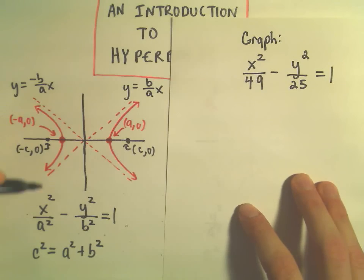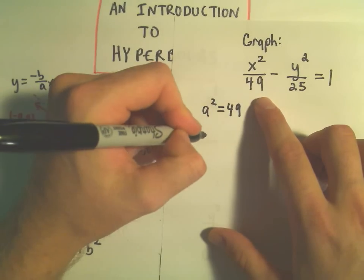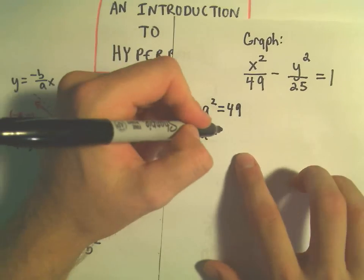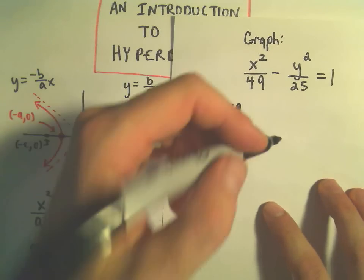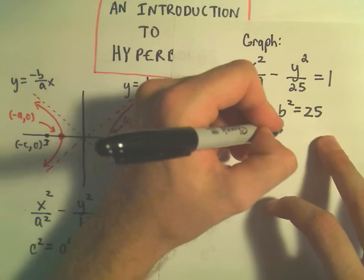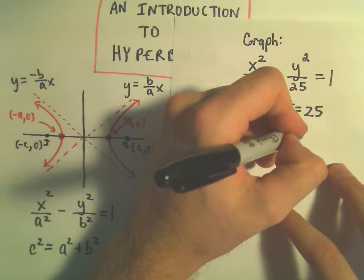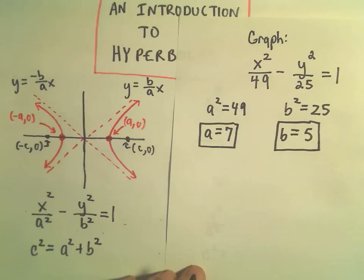So a squared is going to equal 49. So if we take the square root we would get positive and negative 7. But I'm just going to keep the positive 7 for my a value. Our b squared would equal 25. Well again if we take the square root I'm going to keep just the positive solution. So I'm going to use b equals positive 5.